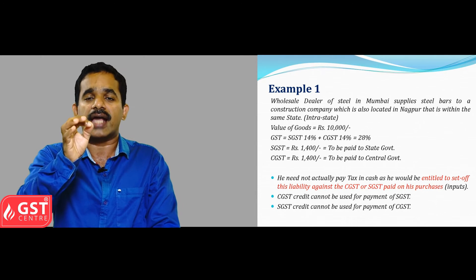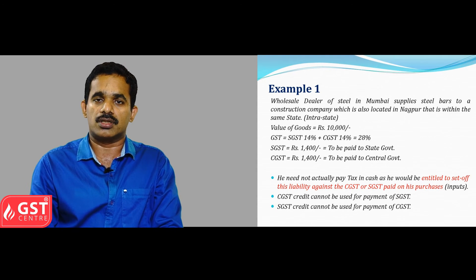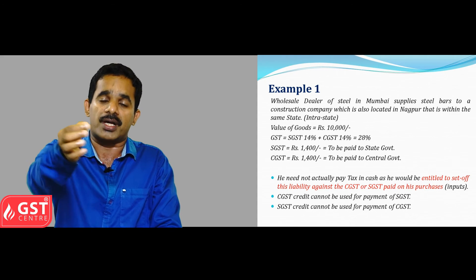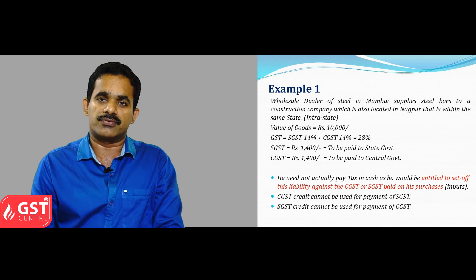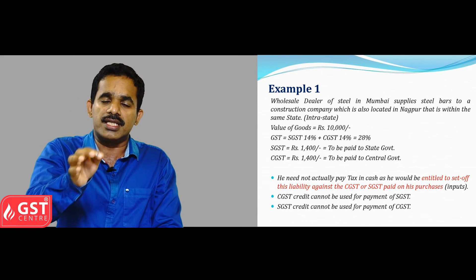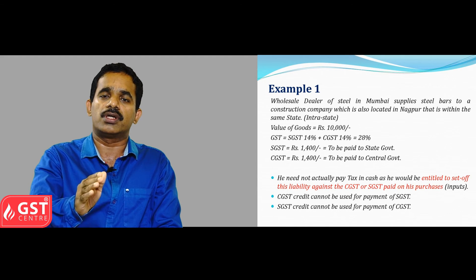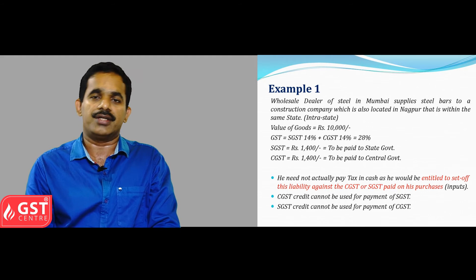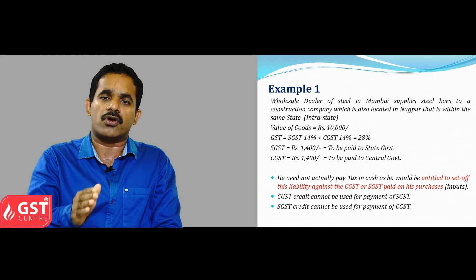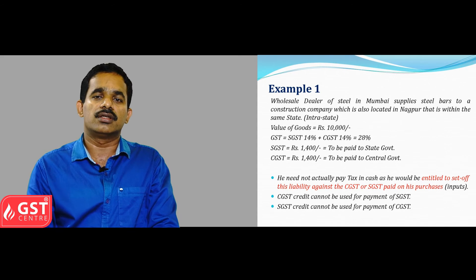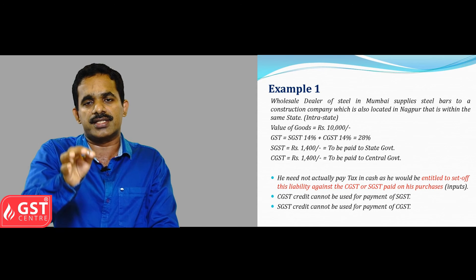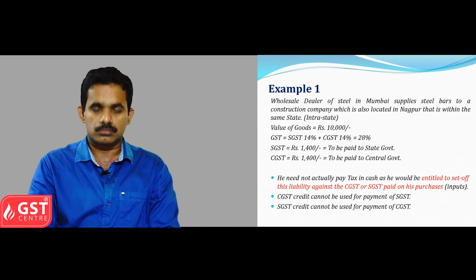Actually, he need not pay such tax directly to the government, because on a B2B transaction he can claim input tax credit on any goods or services purchased by him. One important thing: if he purchased any goods or services and paid CGST, such CGST input tax credit can be set off against only CGST liability. Any SGST paid on input goods or services can be set off against only SGST liability. That is, CGST credit cannot be set off against SGST liability, and SGST input tax credit cannot be set off against CGST liability.